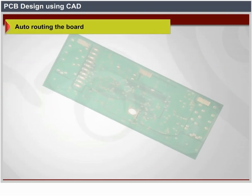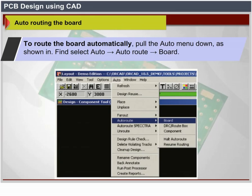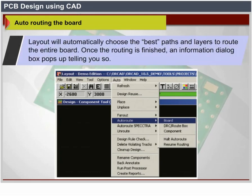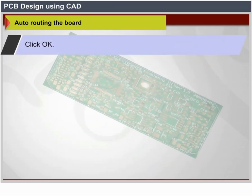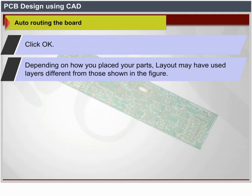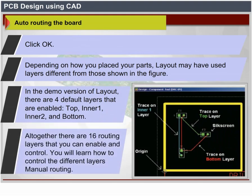Auto routing the board: to route the board automatically, pull down the Auto menu and select Auto > Auto Route > Board. Layout will automatically choose the best parts and layers to route the entire board. Once routing is finished, an information dialog box pops up. Click OK. Depending on how you placed your parts, Layout may have used layers different from those shown. In the demo version of Layout, there are 4 default layers enabled: Top, Inner 1, Inner 2, and Bottom. Altogether, there are 16 routing layers that you can enable and control. You will learn how to control the different layers in manual routing.